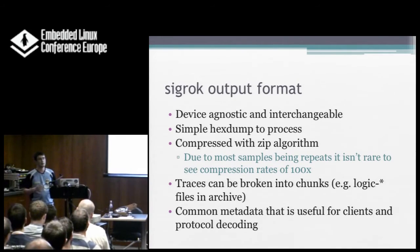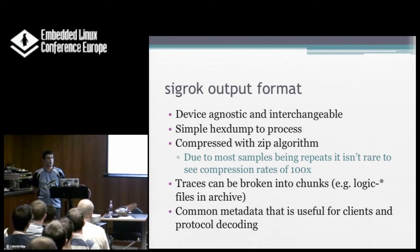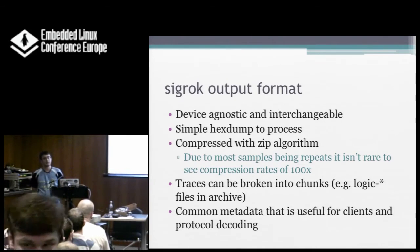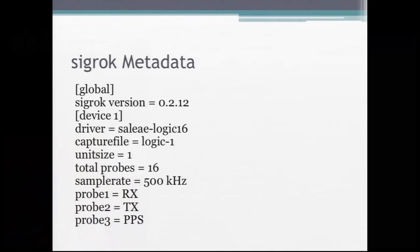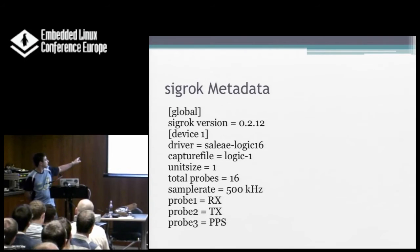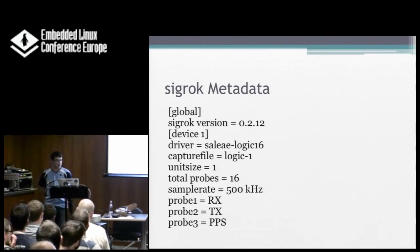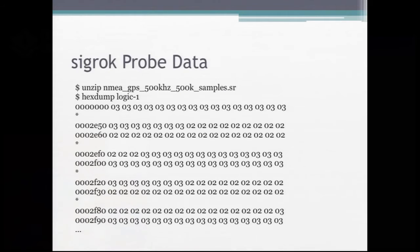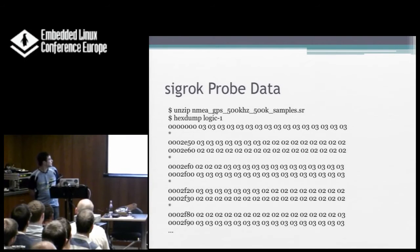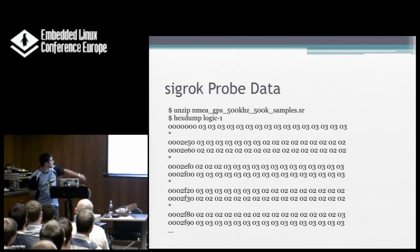You could also have multiple devices outputting to the same format file. The common metadata is useful for clients and protocol decoding — it keeps basic data like the sample rate, what probes are used, the actual labels for each probe, how many groups are enabled, which device was used, and also what version. Here's an example of one of the output files unzipped. You can see a hex sample: for value 3, probes 1 and 0 are high — transmit and receive high — and value 2 means receive went low. So this is a UART dump of a GPS module.